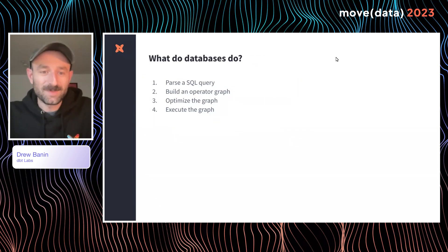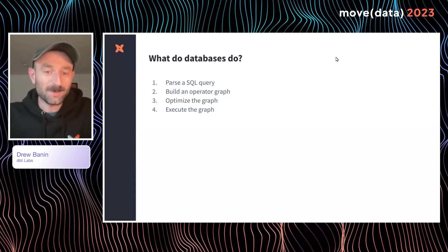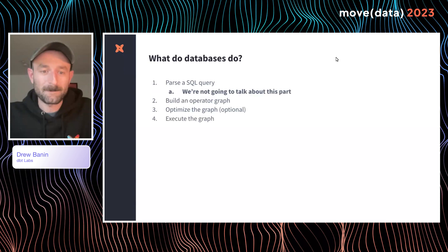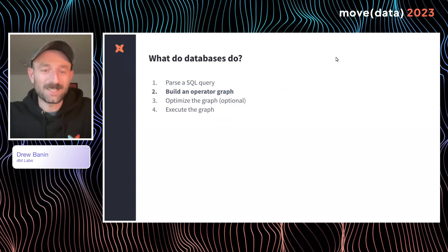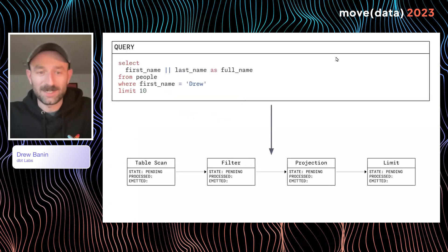At a high level, databases parse SQL queries, build operator graphs, they optimize that graph, and then they execute the graph. We're not going to talk about SQL parsing in too much detail — it's an awesome topic, but we just don't have the time today. Instead, we're going to start by talking about an operator graph and what that means and what it does.